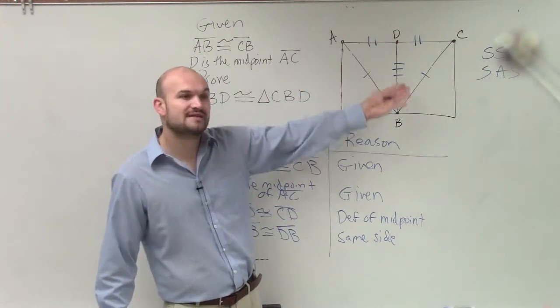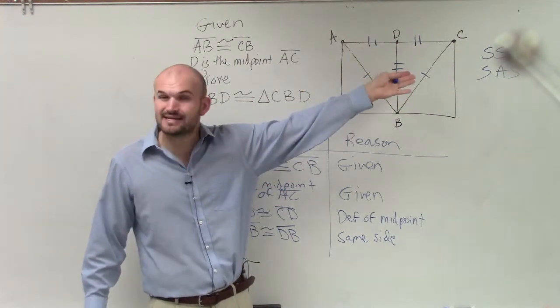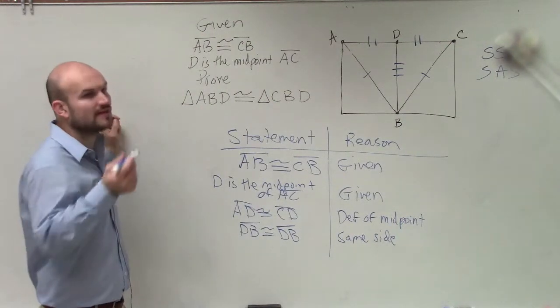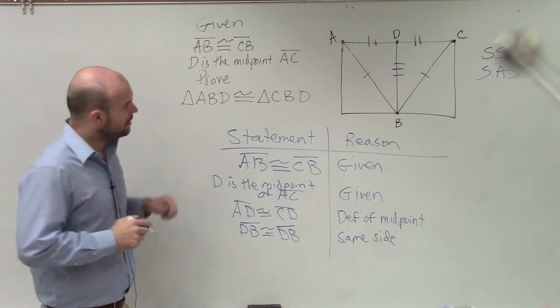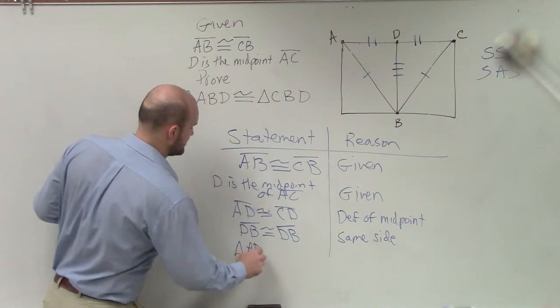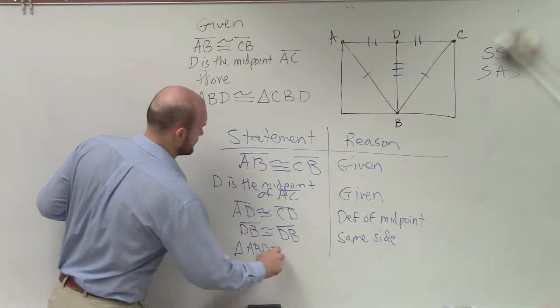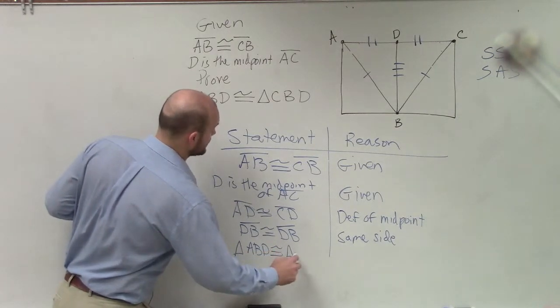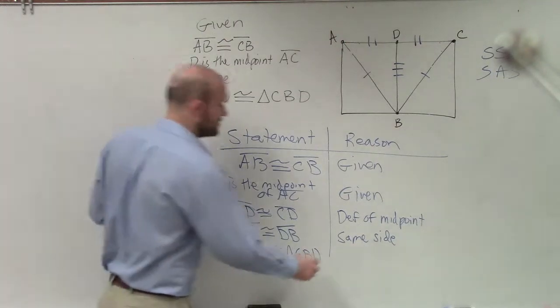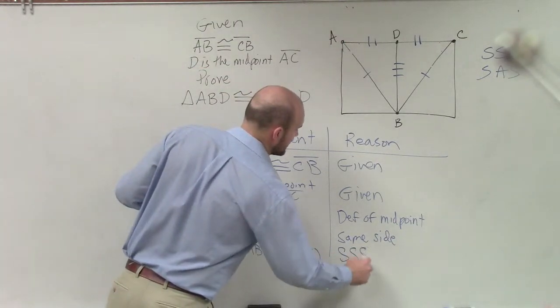So now we have side-side-side. So since we have side-side-side for these two triangles, now we can say triangle ABD is congruent to triangle CBD. And why do we know that those two are congruent? Because we have side-side-side.